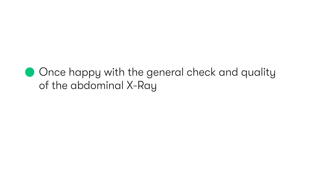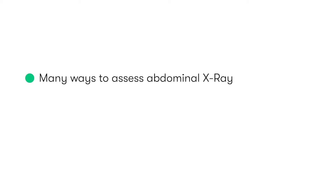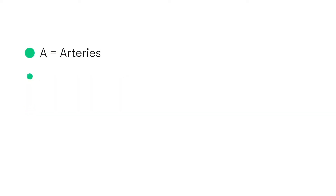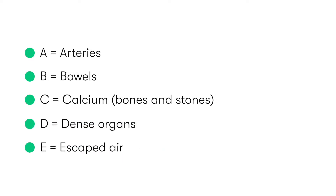Once we're happy with the general check and quality of the abdominal X-ray, we can begin our systematic approach for identifying abnormalities. There are lots of different ways to approach an abdominal X-ray, but the surgical teaching approach uses the mnemonic ABCDE: A stands for arteries, B is bowels, C is calcium (so bones and stones), D is dense organs, and E is escaped air.